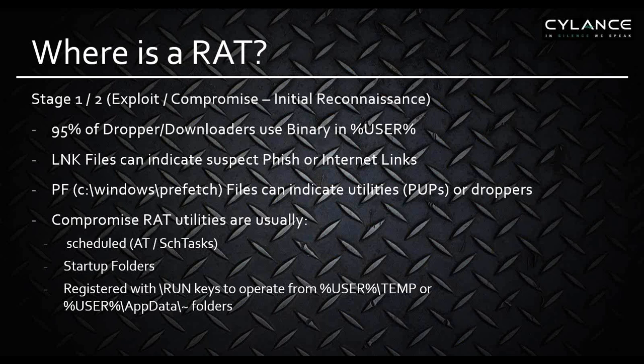Some advantages to knowing this: you can find link files often related to internet links sent in phishing email, or self-executing zip or 7z type files. Those link files are under the profile name of the account that initiates the compromise activity on the local system. You can find prefetches — unless you're on a server — in user endpoints that can indicate anomalous utilities or potentially unwanted programs, which may be droppers or proxy utilities like the Hux proxies. That can help you identify the user profiles that provided the method of ingress to the machine.